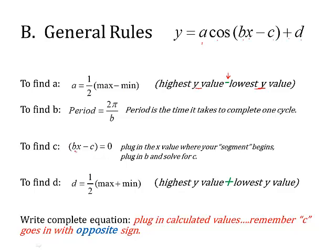To find c - that's this section of the equation, bx minus c - so you have the b value because you've already calculated it. The x value is the place where your little segment of the graph begins, whatever that x value is on the graph. That's what you use for x there. And then you plug it all in and you solve it for c. Again, it will make sense when we work a problem.